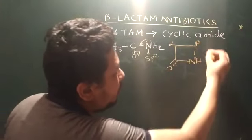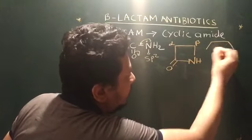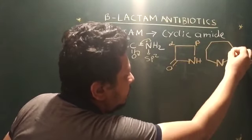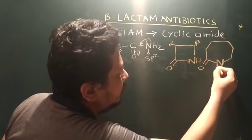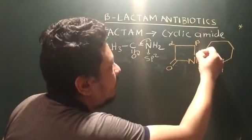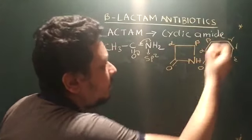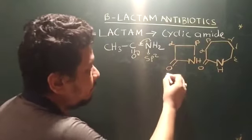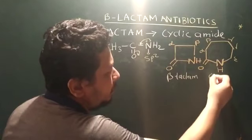Or you have maybe the 7-member ring, which is like this, and you have also alpha, beta, gamma, delta, epsilon. So this is known as beta-lactam, this is caprolactam.